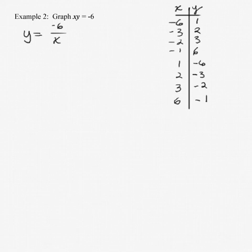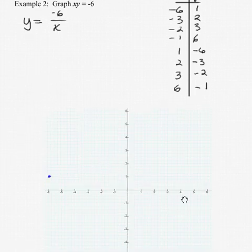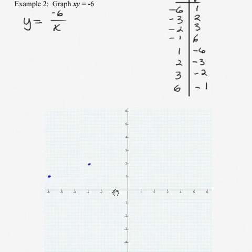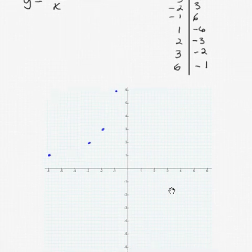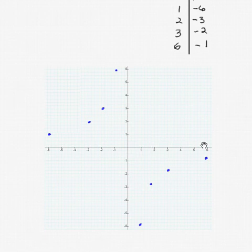I chose these numbers carefully — if k were 2 or 7, we'd end up with some fractions. Let's take a look at our graph. We plot the points: (−6, 1), (−3, 2), (−2, 3), (−1, 6) in quadrant 2, and then the remaining points: (1, −6), (2, −3), (3, −2), (6, −1) in quadrant 4.